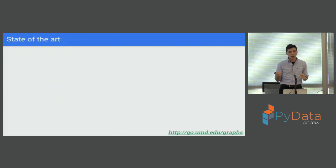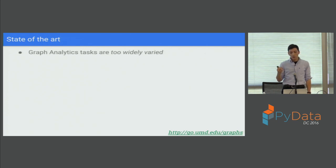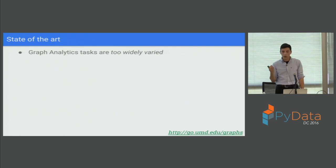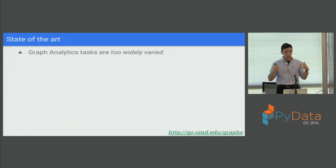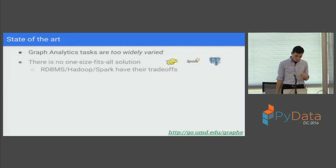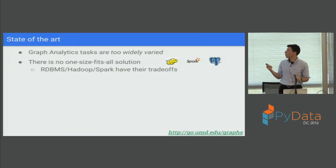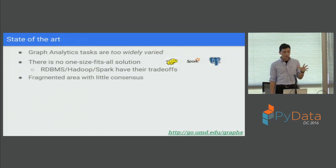Now I want to talk about the state of the art — what systems people are using to do these different types of analyses. The tasks are too widely varied, because each type of analytics requires different optimizations in terms of how the graph is stored and how the data is read. There's no one-size-fits-all solution. Systems like Hadoop, Spark, and relational databases have their trade-offs. It's a very fragmented area with little consensus about the best system for any given use case.